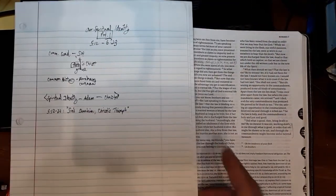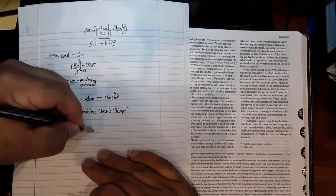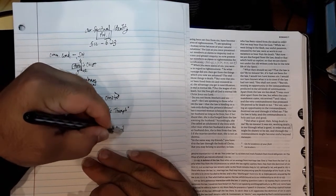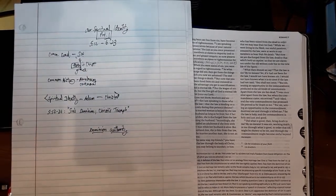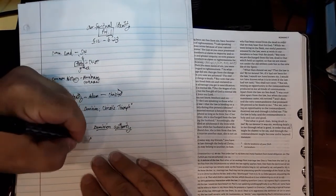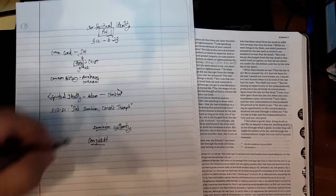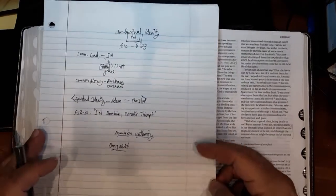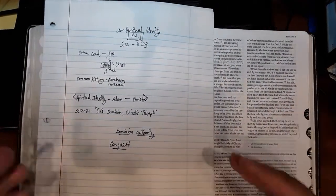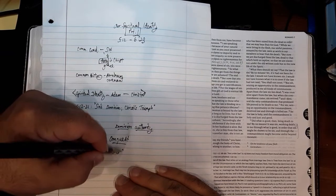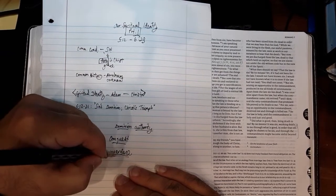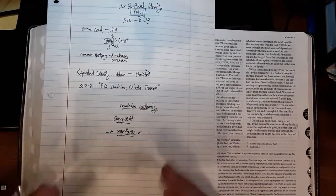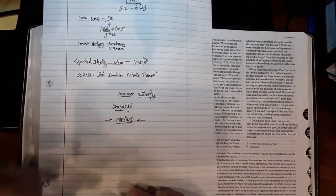And because of one man's trespass death exercised dominion. There's that word again. Much more surely will those who receive the abundance of grace and the free gift of righteousness exercise dominion in life through the one man, Jesus Christ. Let's talk a little bit about dominion. The word for dominion also means authority. Some of your translations may say authority. But when we talk about dominion, we are using language of conquest. Now, why is that important? Conquest comes from the language of dominion, the language of authority in conquest, which comes from a kind of word bank of warfare.